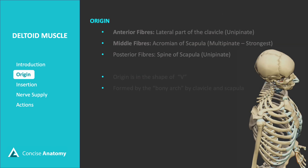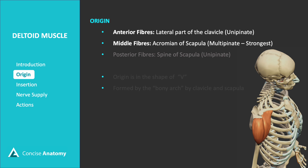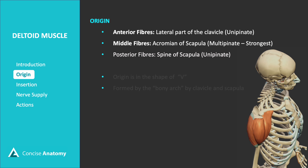The deltoid muscle has a distinct origin from three main areas. The anterior fibers originate from the lateral part of the clavicle, aiding in forward arm movement. The middle fibers arise from the acromion of the scapula and are multi-pennate, making them the strongest part of the muscle and essential for arm abduction. The posterior fibers originate from the spine of the scapula, facilitating backward arm movement. These fibers together form a V-shape.